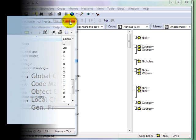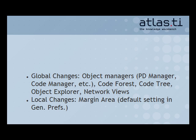In a final note, let's review the places where you can rename objects in place and their respective scopes. You can make global changes in all object managers, the Object Explorer, and the Code Forest. In the margin area, you can make local or global changes, depending on the setting that is active in your general preferences. And when you rename your objects in network views, this will also have a global impact on your project, although in-place editing is not yet available in these windows.